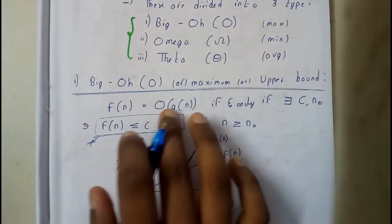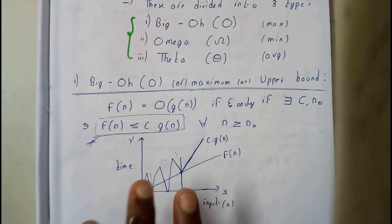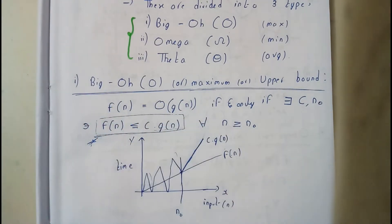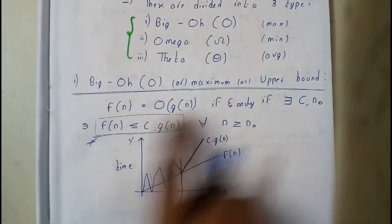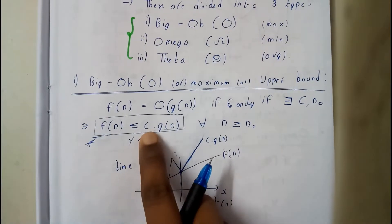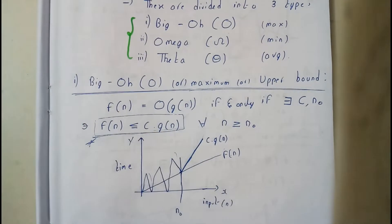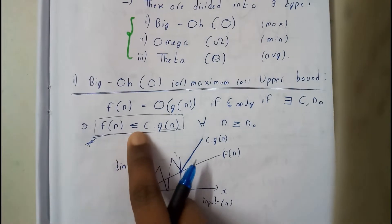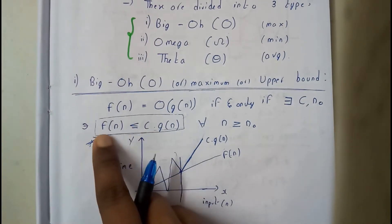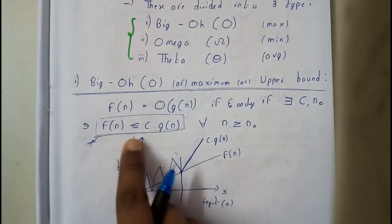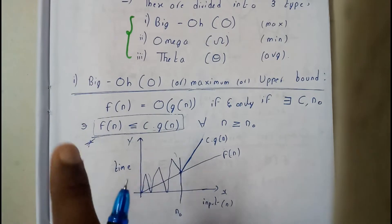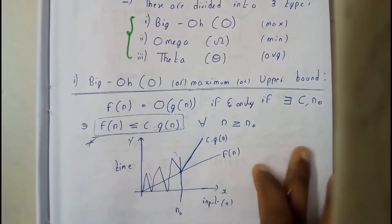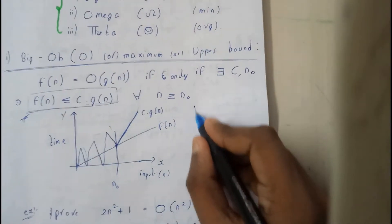Whatever you may forget about other things, you should remember this formula for problems. If you want to write the statement in an exam, you must write the whole statement perfectly — writing only part of it will not give you marks. Here, f(n) is less than or equal to c·g(n).